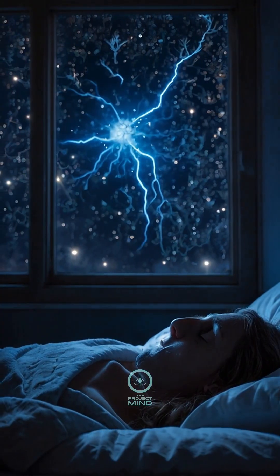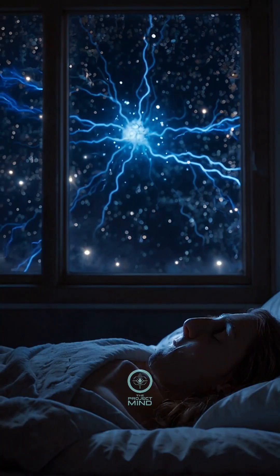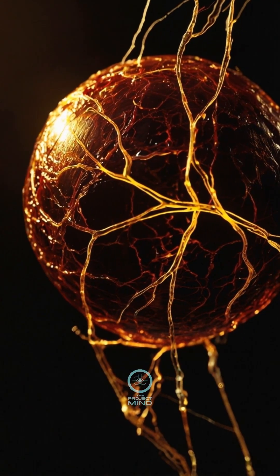Your brain doesn't care if what you think serves you or works against you. It just reacts to your imagination. And when you repeat a thought again and again, the brain builds shortcuts.